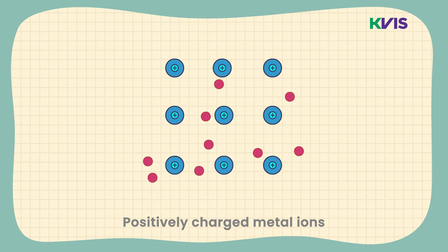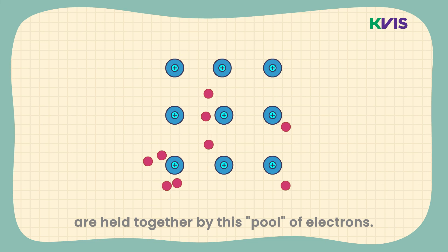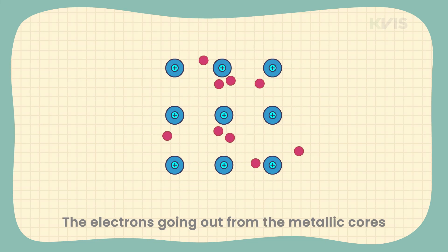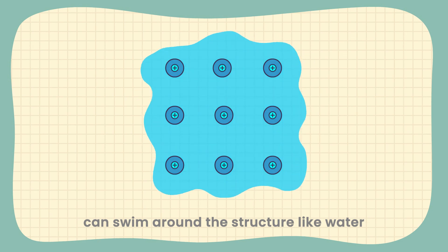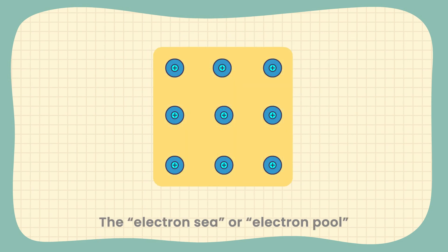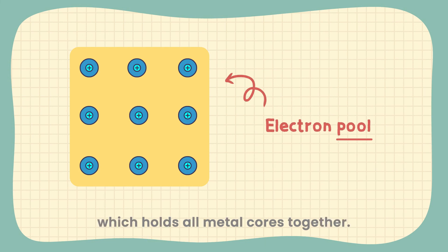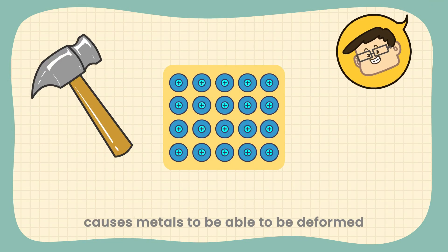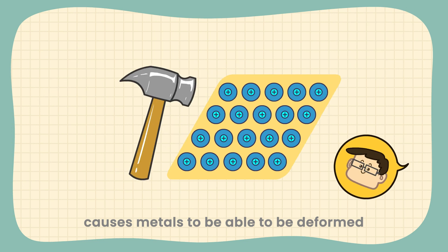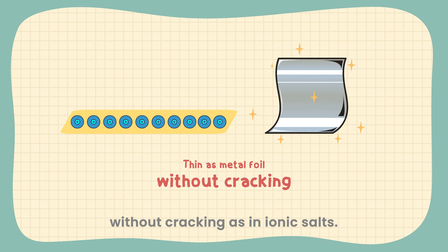Positively charged metal ions are held together by this pool of electrons. The electrons going out from the metallic cores can swim around the structure like water and hold everything together — this is called the electron sea, or electron pool. This mechanism of bond formation causes metals to be able to be deformed as thin as metal foil without cracking, unlike ionic salts.